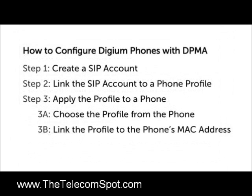Setting up a Digium phone with the DPMA involves a simple three-step process. Step one is to create a SIP account in sip.conf. In tandem with the SIP account, I will also set up some other general Asterisk configuration, including a mailbox in voicemail.conf, an extension to dial the SIP account in extensions.conf, and call parking using the sample features.conf.